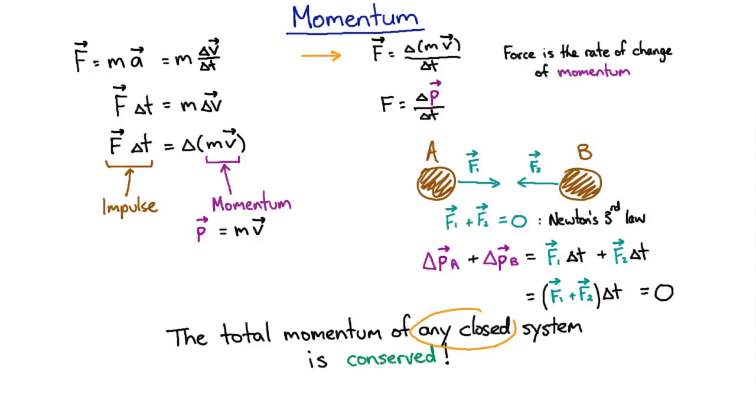And so a closed system is where you've included all the bits that are interacting with each other, that's not interacting with anything outside the system. And then if you look at that, the total momentum of any closed system has to be conserved.